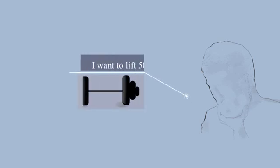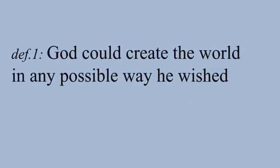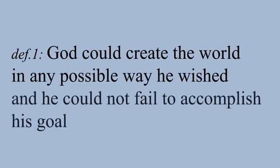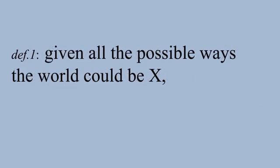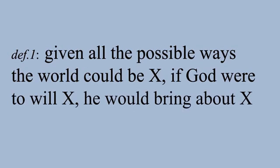A power of human beings is limited by their inability to execute what they've willed. For instance, I may wish to lift 500 pounds, but I can't make that scenario real. This helps us to intuitively understand what being all-powerful means. Being all-powerful means that God could create the world in any possible way that he wished and he could not fail to accomplish his goal. Simply rephrasing the above sentence using different words, we get a full definition. Definition 1: Being all-powerful means given all possible ways the world could be X, if God were to will X, he would bring about X.